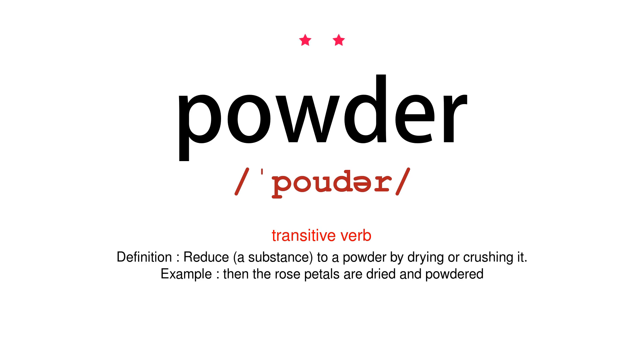Transitive Verb. Definition: reduce to a powder by drying or crushing it. Example: then the rose petals are dried and powdered.